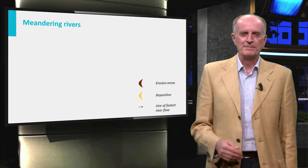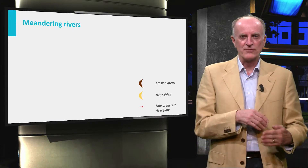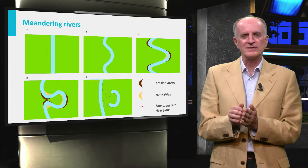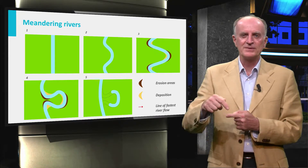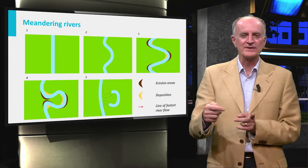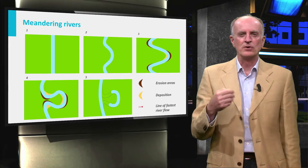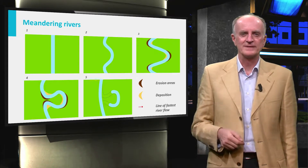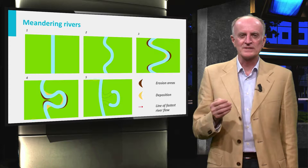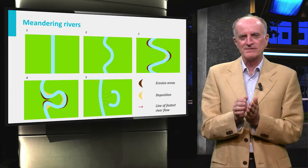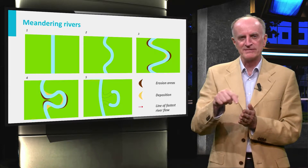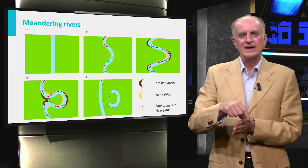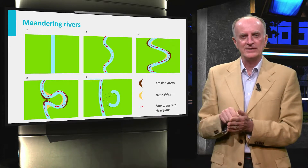Meanders are bends in the river course which form from small irregularities and progressively grow until the neck between the two meanders is broken and an oxbow lake, detached from the main river, is formed. The process controlling such migration is the lateral variation in river velocity, which is higher on the external side of the meander and low on the inner side.